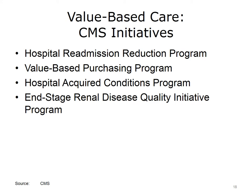The Centers for Medicare and Medicaid Services, or CMS, is the first and largest health care payer to link outcomes to payment. CMS value-based programs reward health care providers with incentive payments for the quality of care they give to Medicare patients, and align with the goals of the Triple Aim. Currently, there are four programs: the Hospital Readmissions Reduction Program, which reduces payments to hospitals with excess readmissions; the Value-Based Purchasing Program, which promotes better clinical outcomes by improving patient experience; the Hospital Acquired Conditions Program, which reduces payments for hospitals with excess hospital-acquired conditions; and the End-Stage Renal Disease Quality Initiative Program, which reduces payment to facilities that don't meet established performance standards.